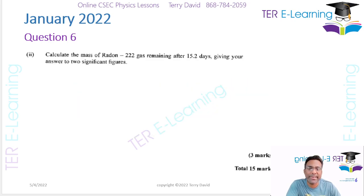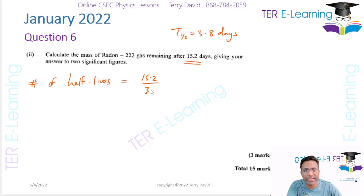In this question here, they said calculate the mass of radon remaining after 15.2 days. Now they told us that the half-life of the sample here is 3.8 days. So what we need to do, we need to first figure out how many half-lives do we have in 15.2 days. So your number of half-lives is going to be equal to 15.2 divided by 3.8, and that's going to give me four. That's four half-lives.